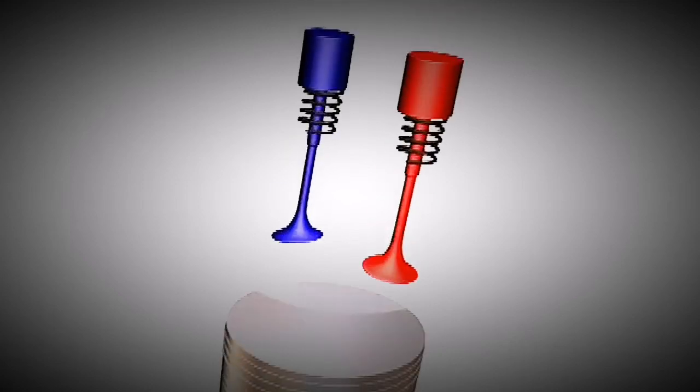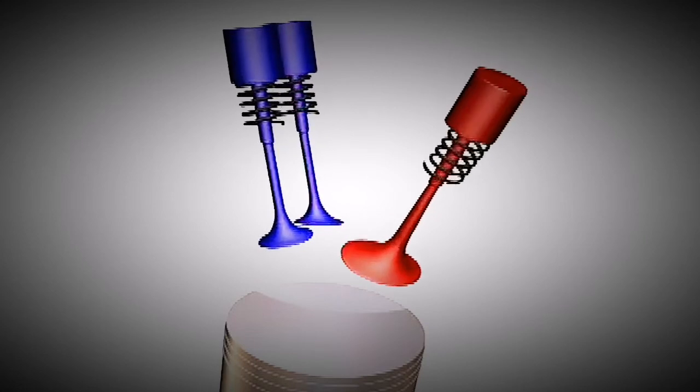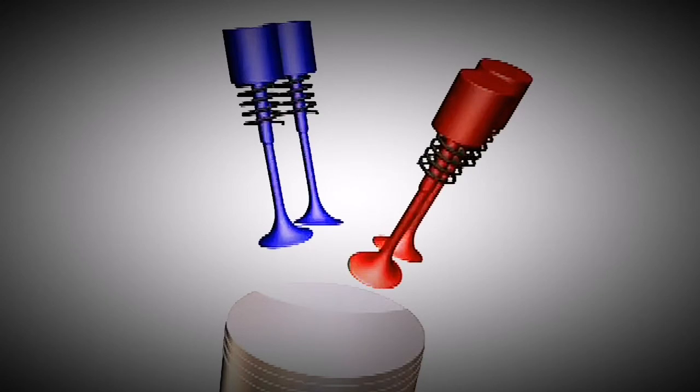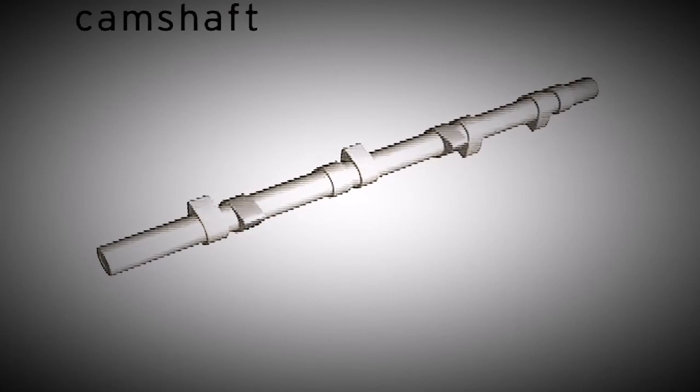Older engines tend to have one intake and one exhaust valve. Some engines have two intake and one exhaust valve. Most high-performance engines use two intake and two exhaust valves. The opening and closing of the valves is performed by the camshaft.